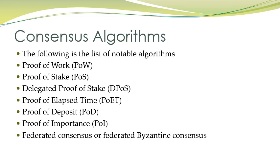To summarize the two types: BFT-based algorithms reach agreement when a certain number of messages are received; leader election-based algorithms elect a leader whose proposed state is agreed upon by all nodes. We will discuss all these algorithms in detail in unit two.